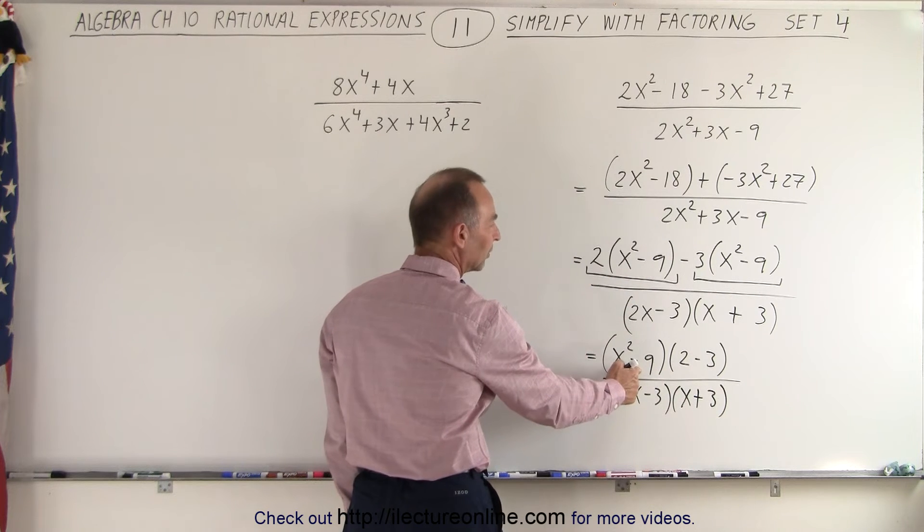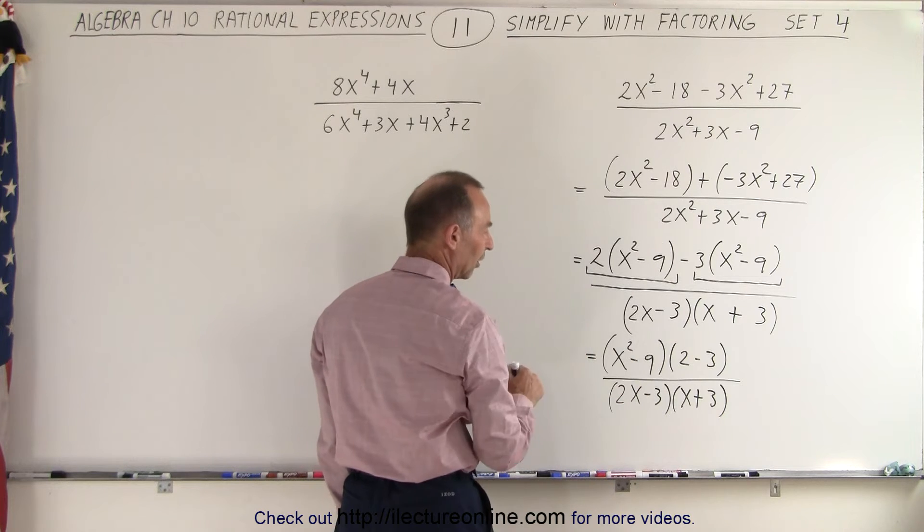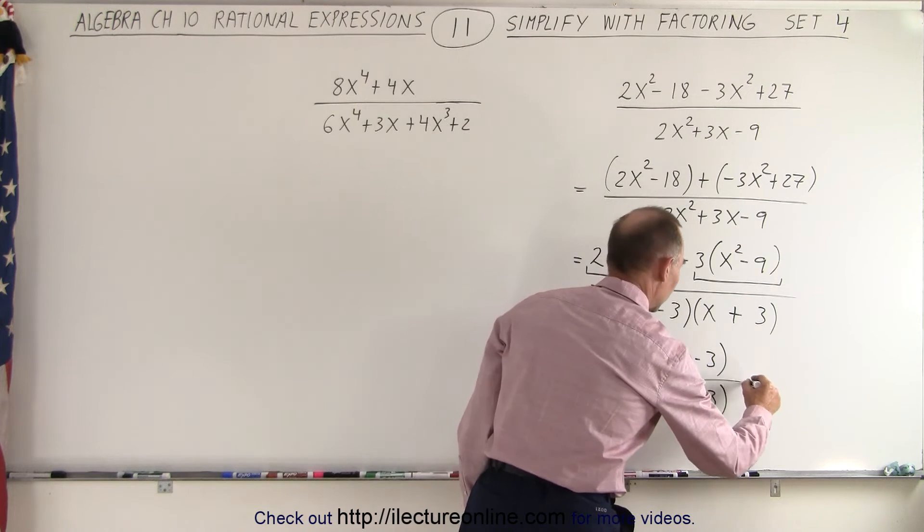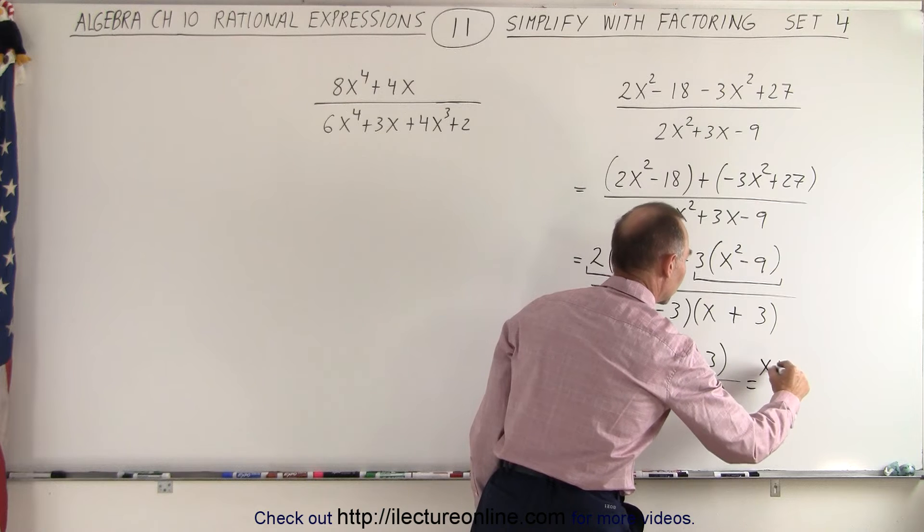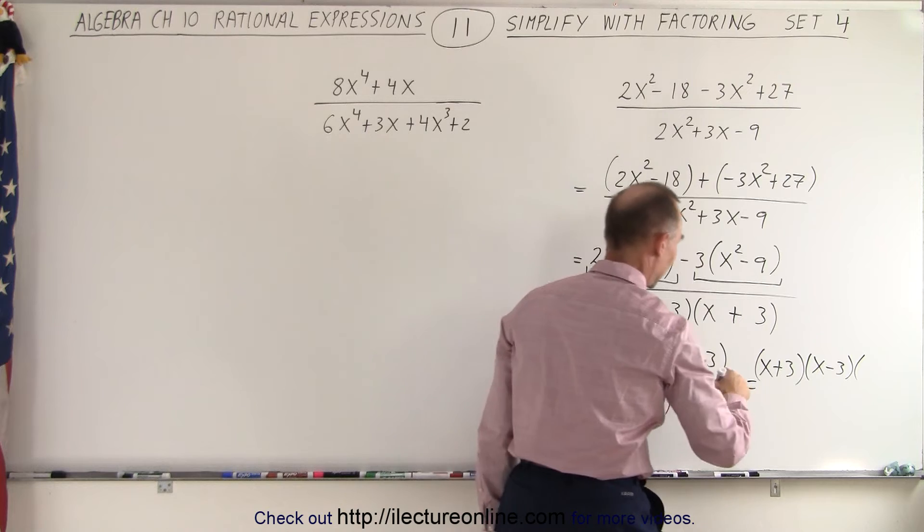Now, notice in the numerator, this can be factored to be x plus 3, x minus 3, because there's a difference of squares. So this can be written as an x plus 3 times an x minus 3 times what we had left.